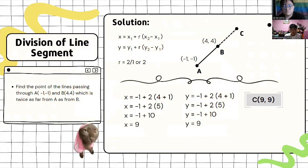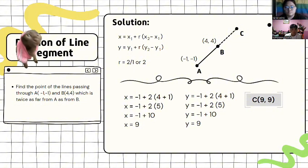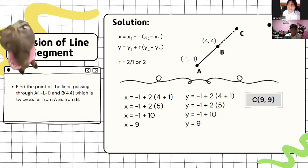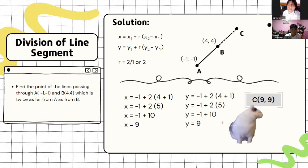So, to determine the solution of this problem, we must first need to know the ratio, which is 2, because it is said that it is twice as far from A as from B. So, 2 is to 1, or 2. And next, is we need to substitute the given to the formula of x sub 1 plus R quantity x sub 2 minus x sub 1, and y sub 1 plus R quantity y sub 2 minus y sub 1.